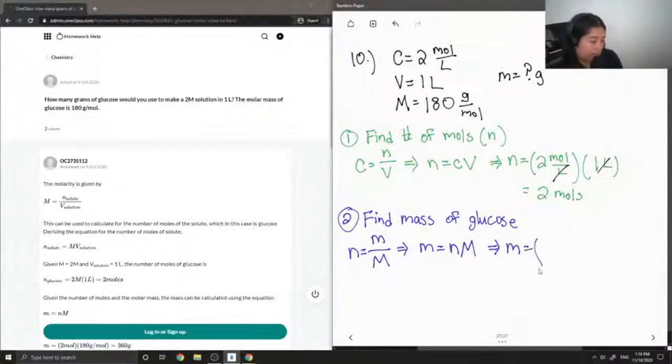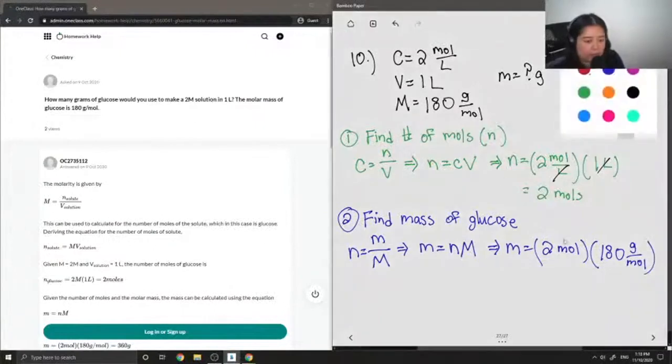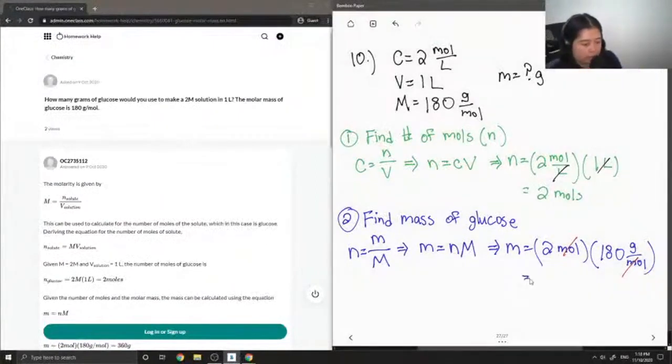So we calculated the number of moles in the previous step to be 2. And the question also gave us the molar mass of glucose, which is 180 grams per mole. So again, if you multiply the two values, you'll notice that our moles will now cancel out. And we are left with a value that is in grams.